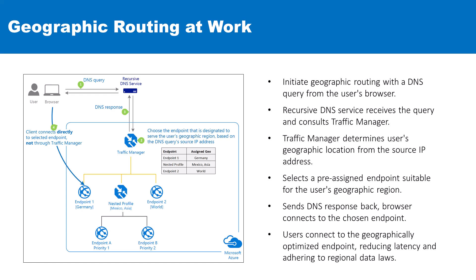It then selects the most suitable endpoint that has been pre-assigned to serve that specific geographical region. For example, if a query comes from a location within Germany, the Traffic Manager would direct the DNS response to endpoint 1 designated for Germany.